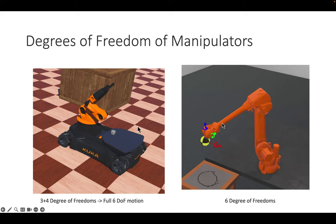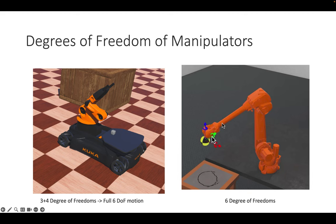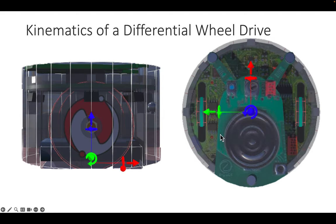Some real-world examples: the Kuka iiwa has four arm joints plus the base providing three more, totaling seven actuated DoF — allowing it to reach all six Cartesian DoF in many different configurations. The ABB IRB robot has six degrees of freedom: motors one, two, three, then a fourth motor, and two more in the wrist. We can also mathematically derive equations relating wheel rotation to the motion of the center of the robot — there is a separate video on Coursera covering this derivation.